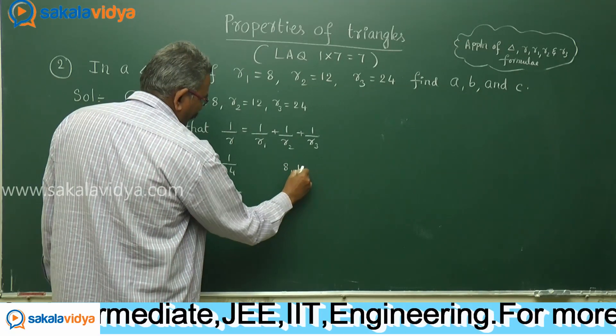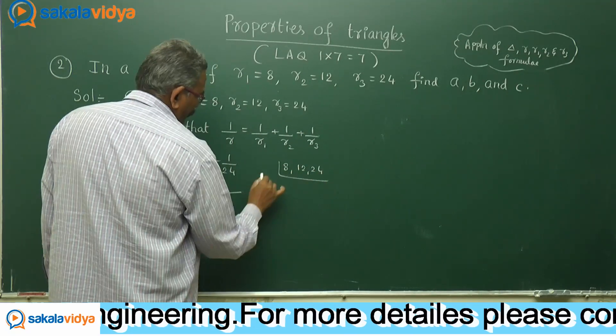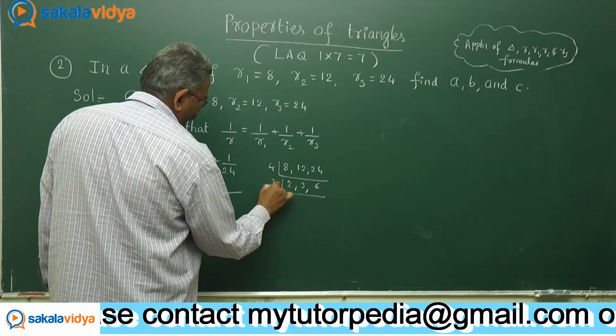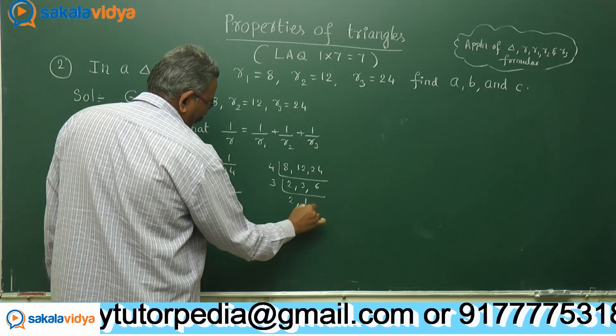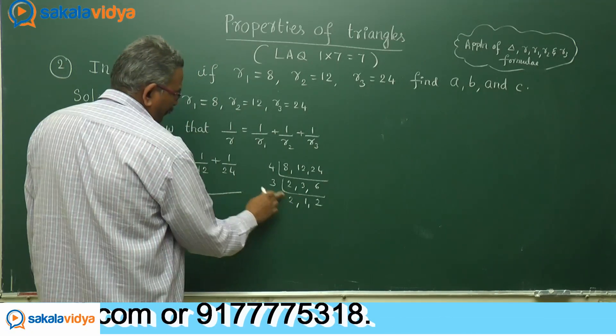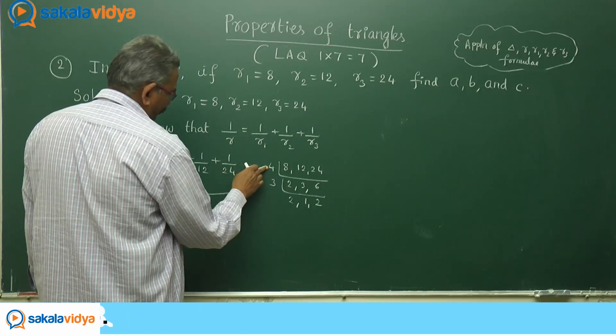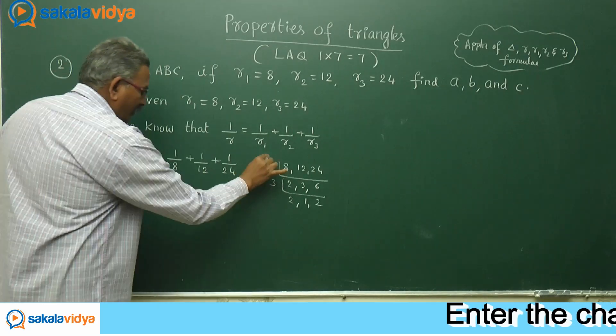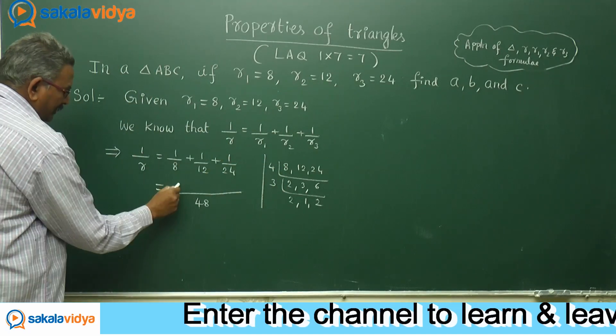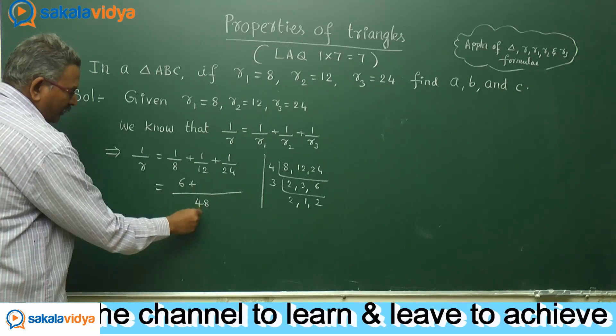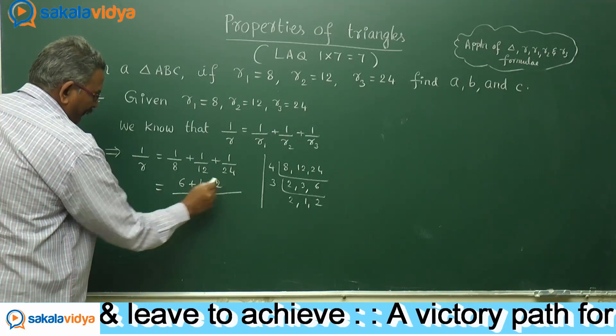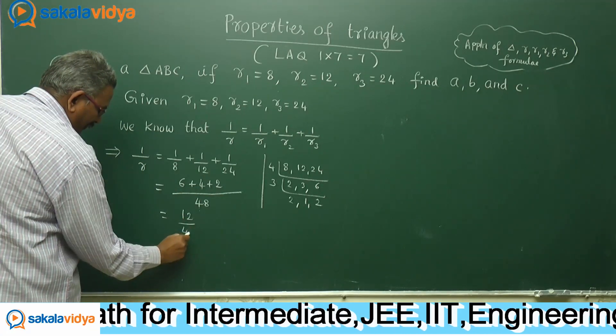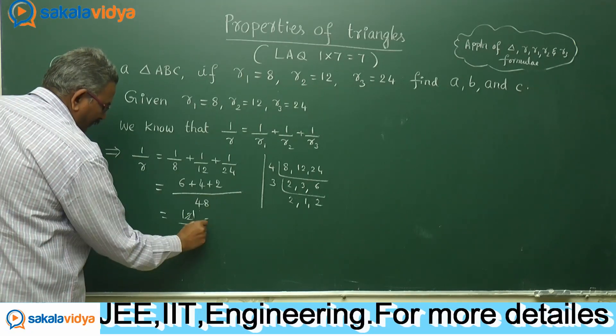Let us find the LCM. Dividing by 4: 2, 3, 6. Dividing by 3: 2, 1, 2. Dividing by 2: 1, 1, 1. So 4 times 3 times 2 equals 24, times 2 equals 48. 48 is the LCM. 48 by 8 equals 6, 48 by 12 equals 4, 48 by 24 equals 2. 6 plus 4 plus 2 equals 12. So 12 by 48 equals 1 by 4.